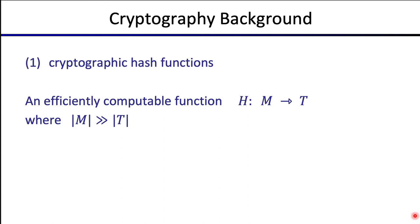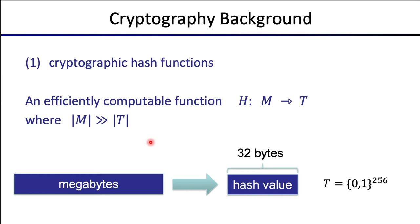A hash function is an efficiently computable function that maps a large domain into a small range. The domain M is much larger than the range T. The picture you should have in mind is that we might be hashing megabytes of data — very large amounts of data provided as input. No matter how much data is provided, the hash function always outputs only 32 bytes.